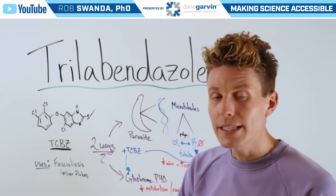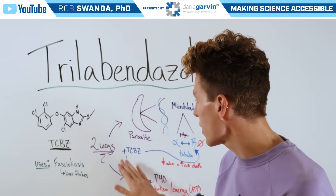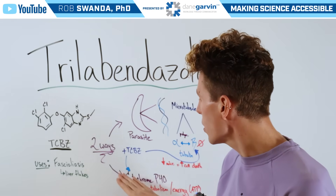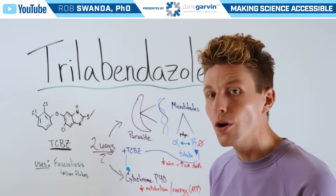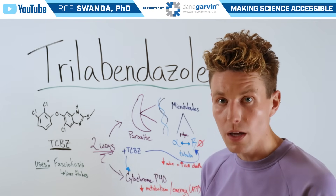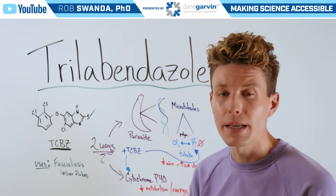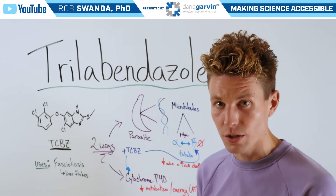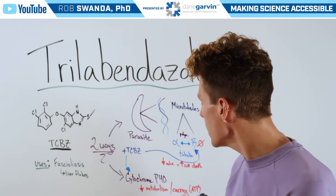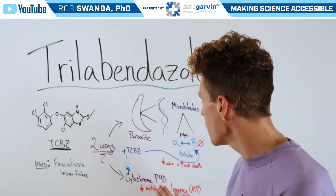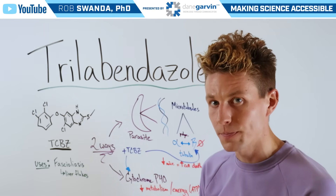A lesser-known mechanism of action for triclabendazole is its ability to interfere with cytochrome P450, an enzyme necessary for metabolism and energy production. It has been shown to decrease its activity, leading to impaired metabolism and impaired energy production.